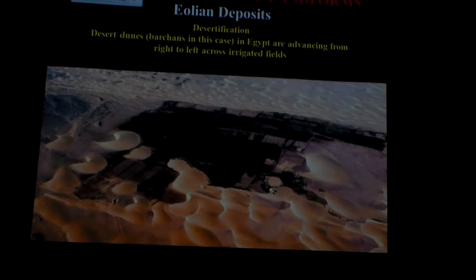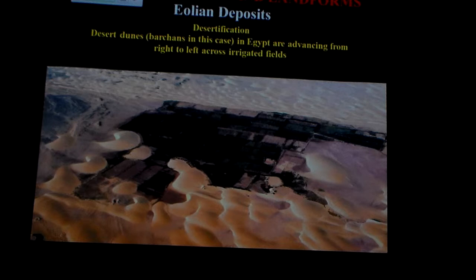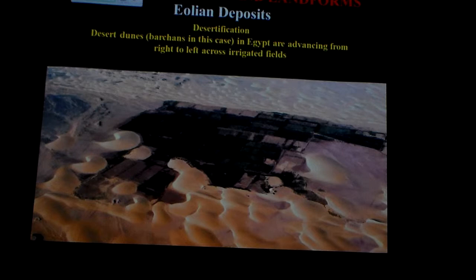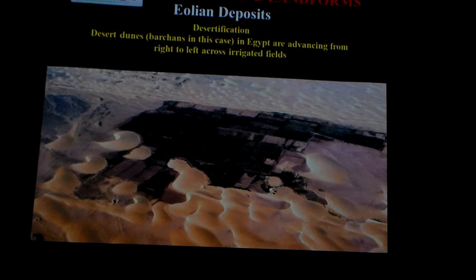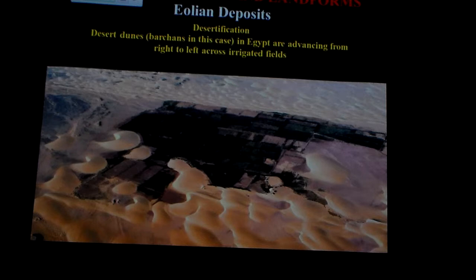These kind of fall in the category of what we call eolian deposits. Whenever you see the term eolian, you know it's wind-driven or wind-produced deposition. Here you can see a farming area and the desert is just rolling over it, claiming what used to be productive acreage. A couple of dunes in this particular shape tell me they're advancing from right to left. If you go to Africa and look at the south edge of the Sahara Desert, that edge of the desert is advancing 30 miles per year. This desertification process is serious and is little by little claiming Africa.